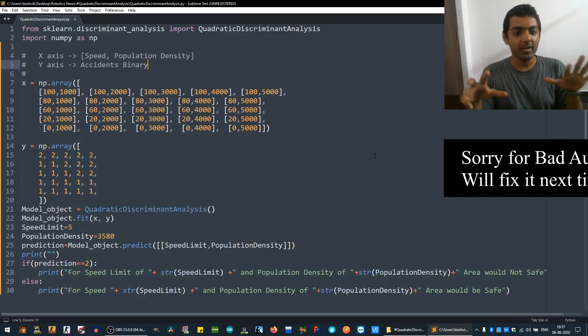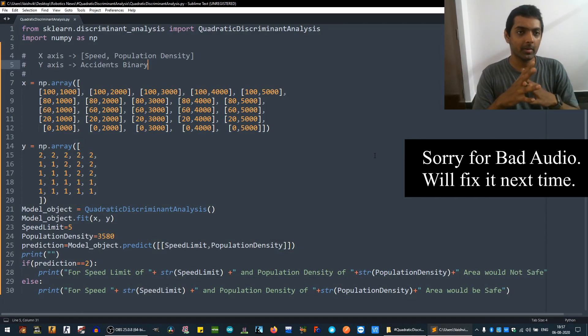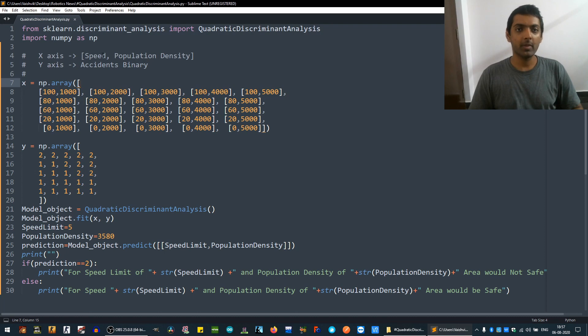So, let's take an interesting example here. If we have made a model in which we have a speed limit and we have a population density. So, we also know that in which areas there are accidents or not. So, we can make a very good model for any authority.